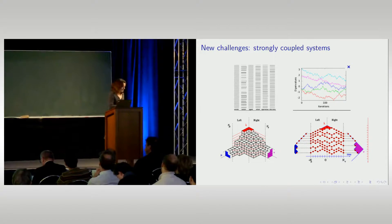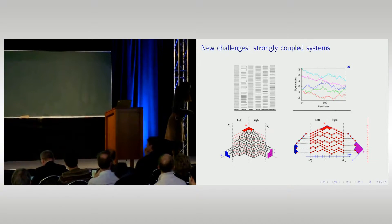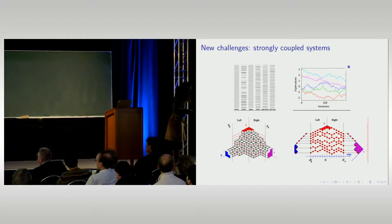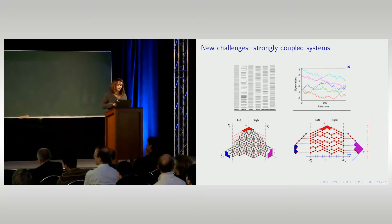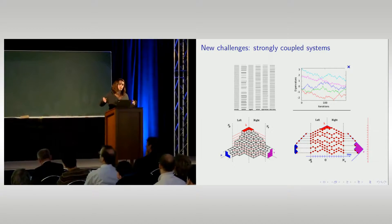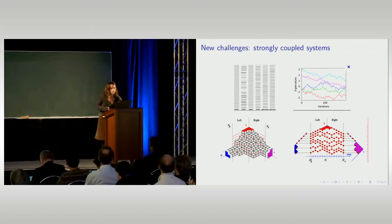A related problem is random tiling: you take a tiling at random uniformly by imposing some boundary conditions, and look at the positions of the horizontal tiles. You would like to understand the macroscopic behavior of these tiles. In this case too, you have a repulsion of level sets, which shows that these are quite ordered and structured random variables. We would like to understand fluctuations and convergence in this kind of setting.